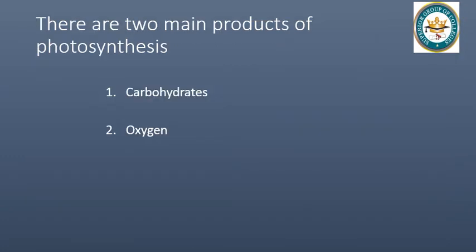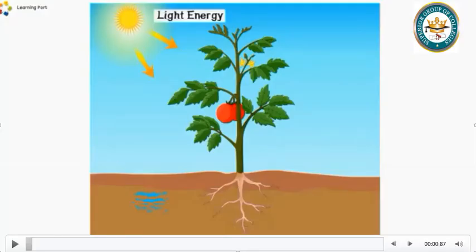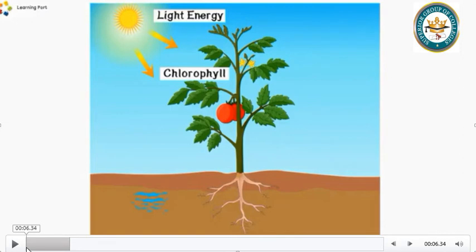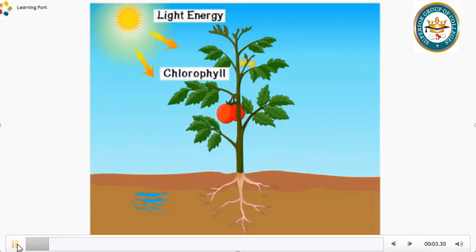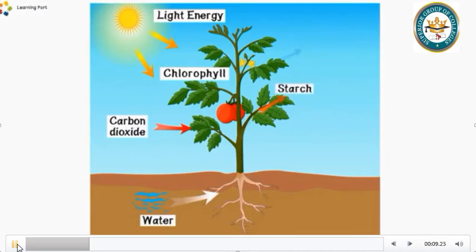If we talk about the products of photosynthesis, there are two main products which we have seen in the equation: carbohydrates and oxygen. The end products are starch and oxygen — starch means sugar, which is carbohydrates.